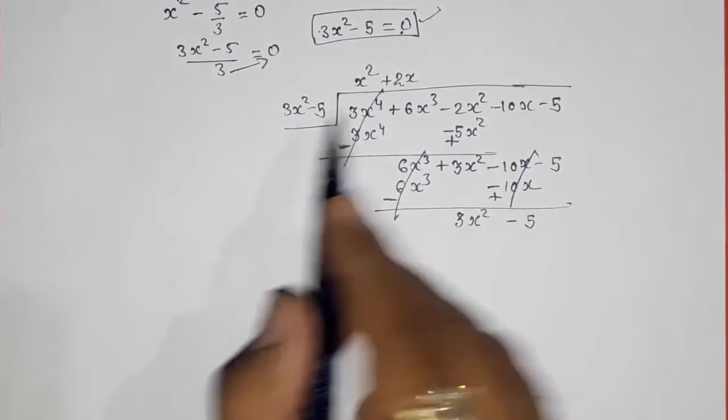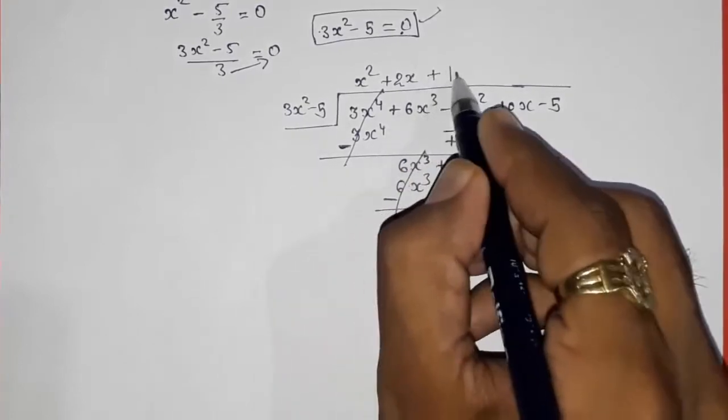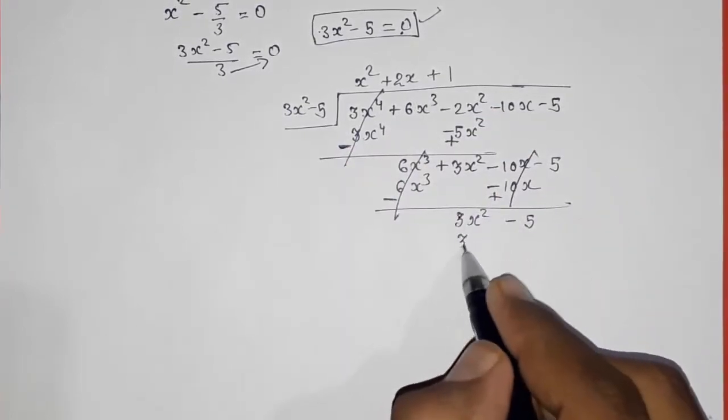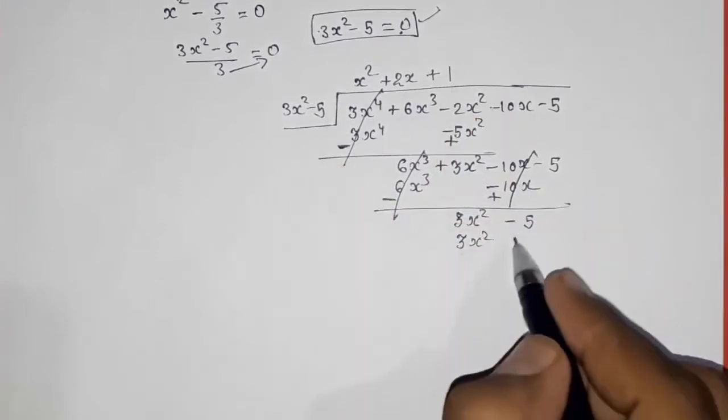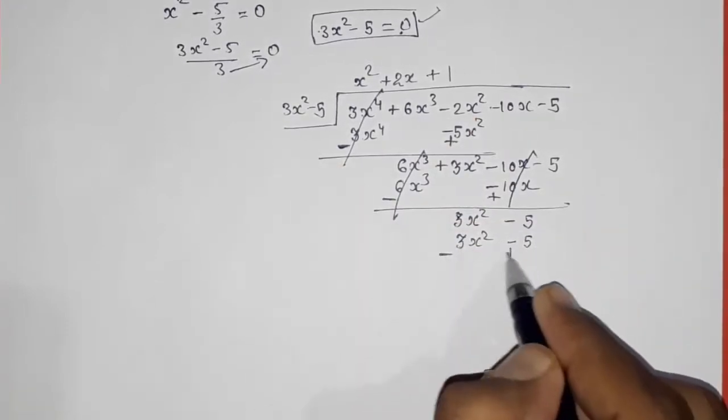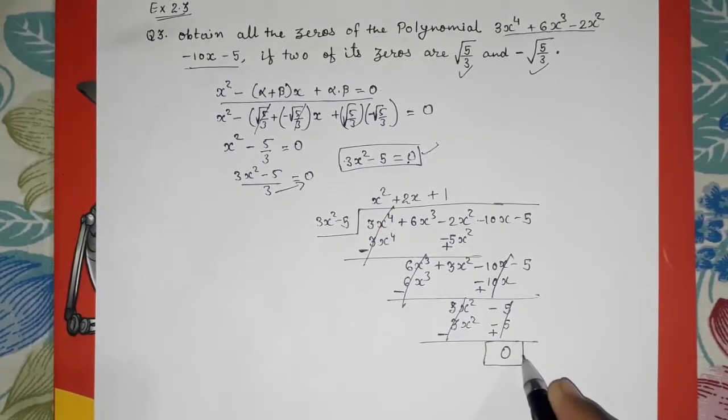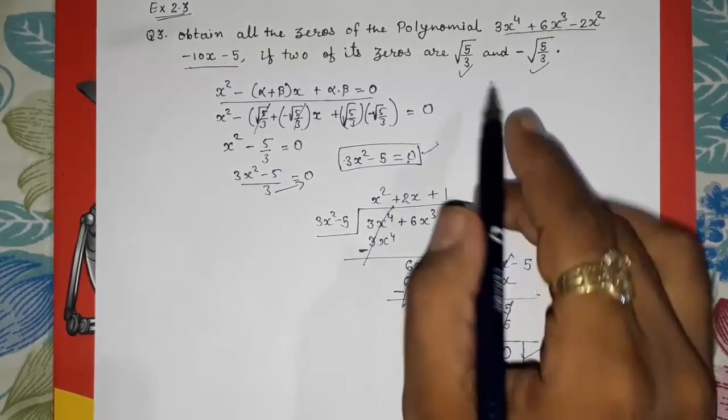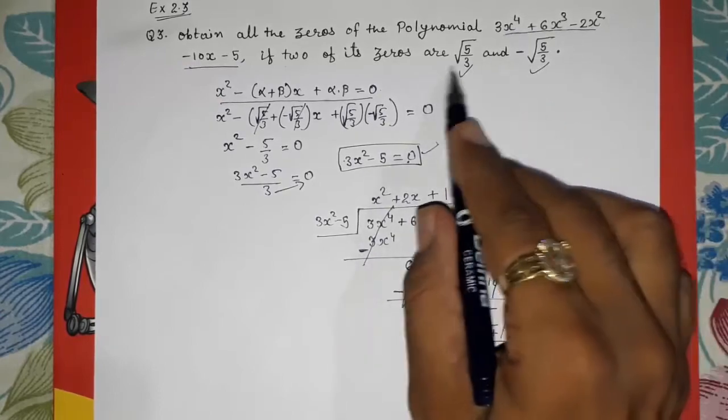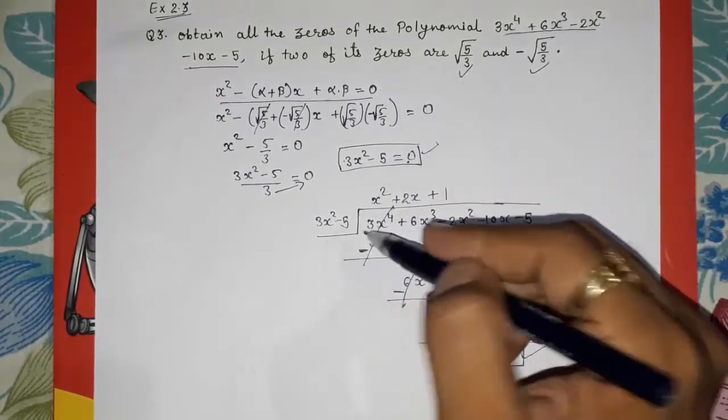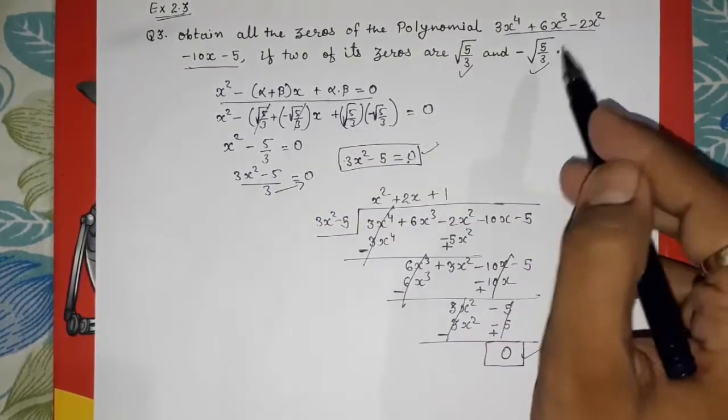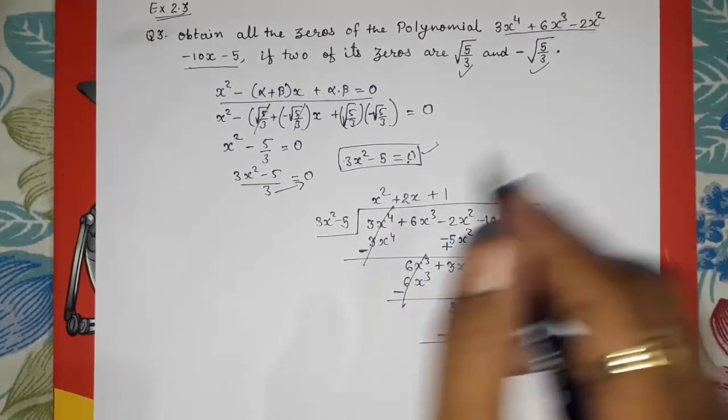Now 3x square minus 5. So multiplying by plus 1: 1 into 3x square is 3x square, 1 into minus 5 is minus 5. Now again sign change. Sign change. Cancels. Remainder is 0. You will always get remainder 0 as these two are the factors, or you can say these two are the zeros. So we are dividing with that equation, so we will always get remainder 0. And we will get the other two zeros from the quotient.